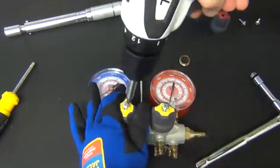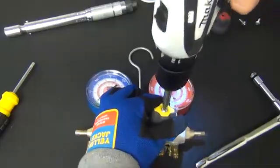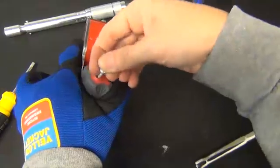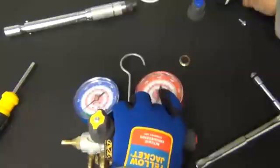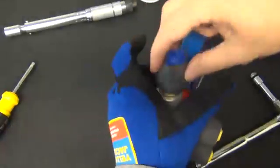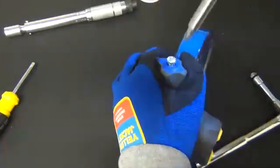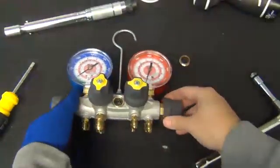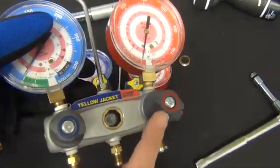Now taking your screw gun again on low torque setting, tighten all your handles. If you had a two valve then you'll just have a blue and a red.